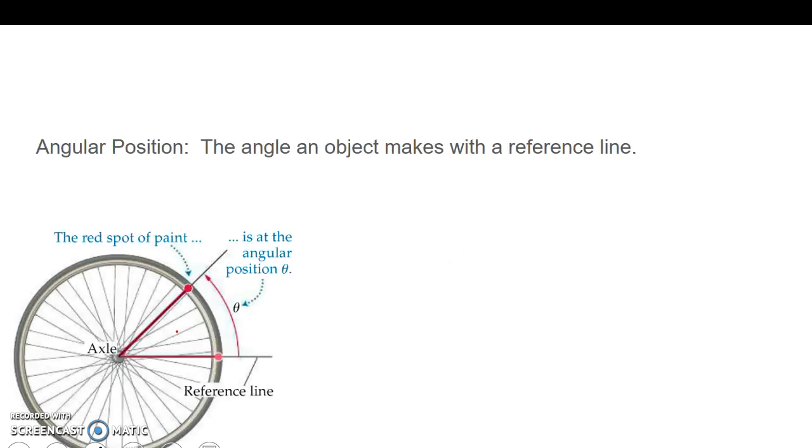First off, angular position. That is the angle in which an object makes with a reference line. When I'm looking at a spinning wheel, I'm going to pick a reference line that's going to be horizontal or parallel to the ground. And then the angle will be from this reference point to wherever the object is at. That's angular position.